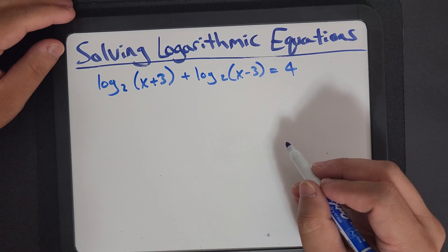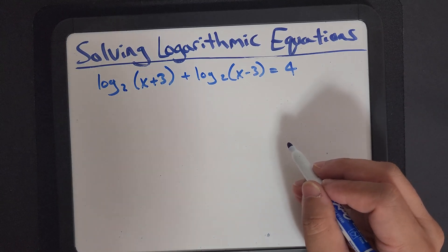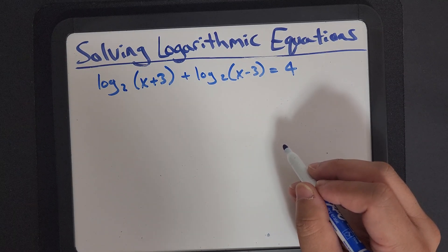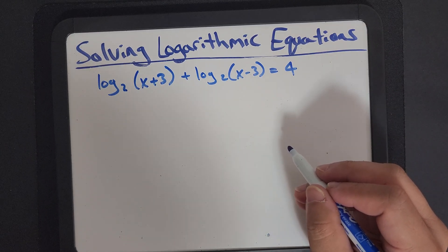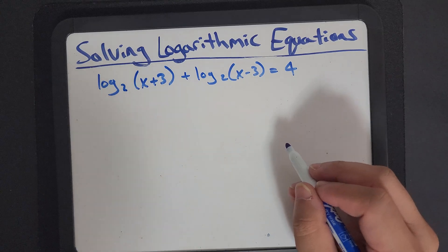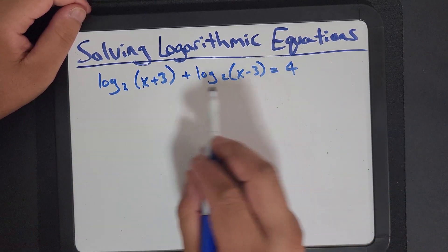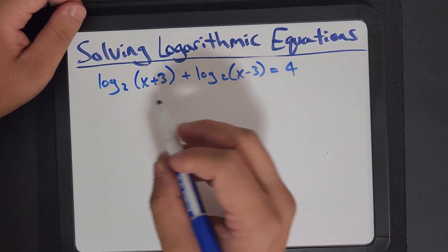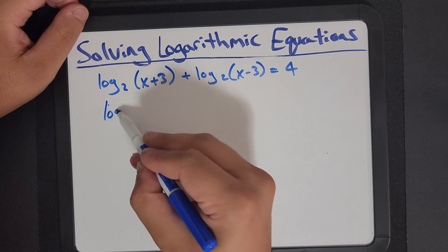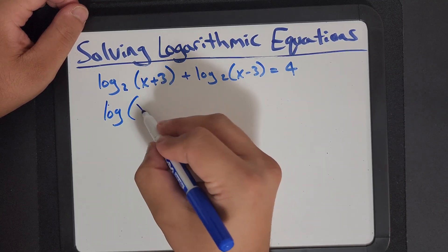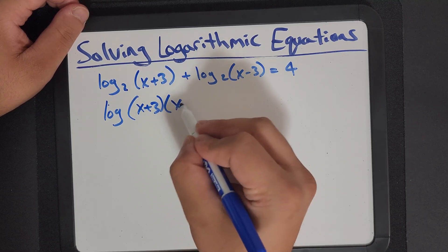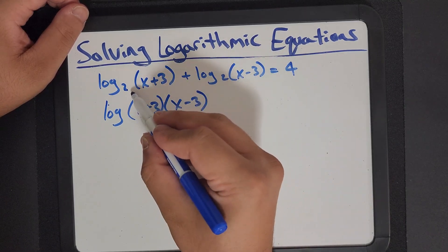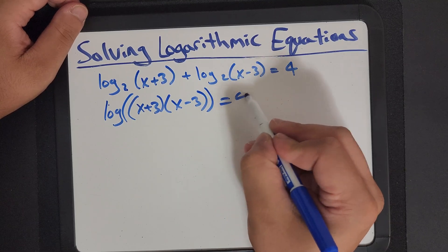So we have log 2 of x plus 3 plus log 2 of x minus 3 equals 4. Now, let's approach this with all of our knowledge of logarithmic expressions and equations and the laws. So I see I'm adding two logs here. So I can actually turn that into the product log.